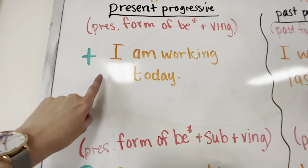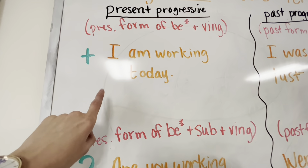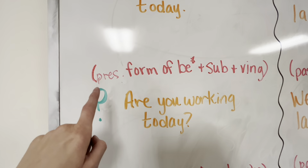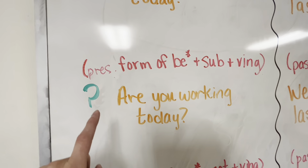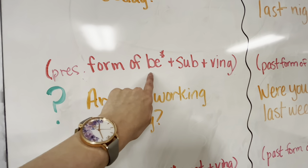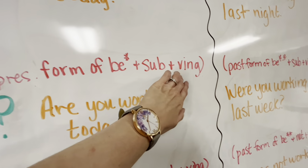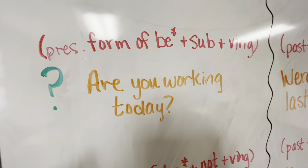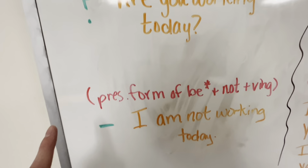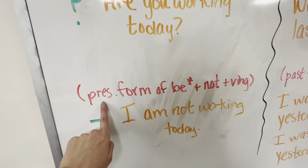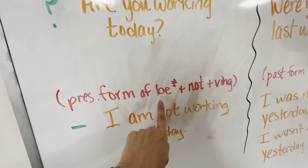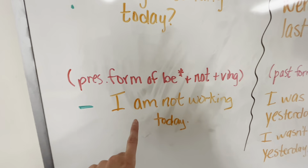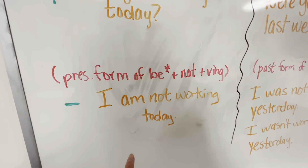Present progressive is formed by the present form of be, plus your present participle — the VING, that ING verb. Positive: I am working today. To form it as a question: present form of be, plus your subject, and your verb form — are you working today? Negative: your present form of be, plus not, plus your verb form — I am not working today.